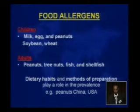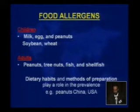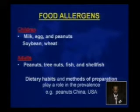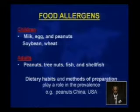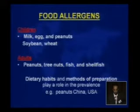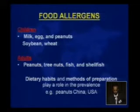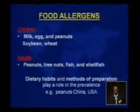Fortunately, about eight food items are responsible for more than 90 percent of food allergic disease. In the pediatric age group: milk, egg, peanut, soybean, and wheat. In adults: peanut, tree nut, fish, and shellfish. Dietary habits and method of preparation may play a role, as peanut allergy prevalence differs between the US, where it is roasted and more prevalent, and China, where it is boiled and less prevalent.